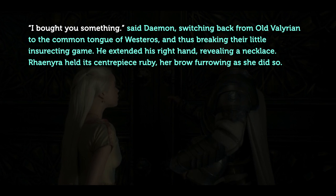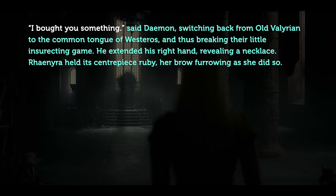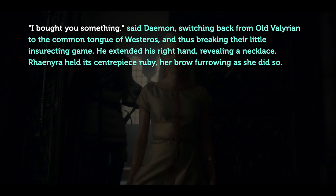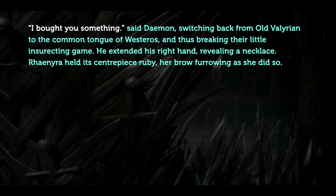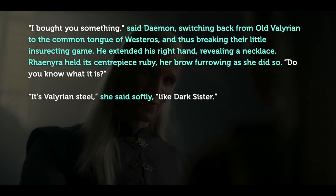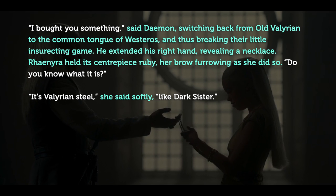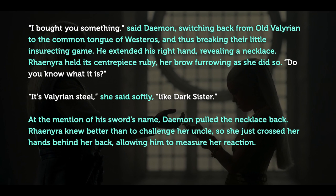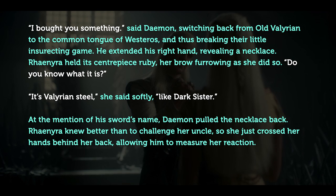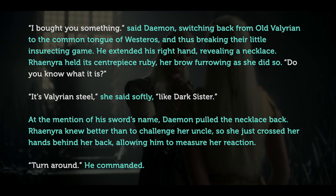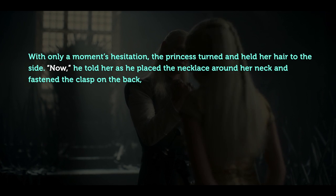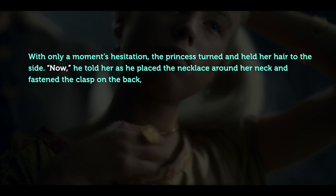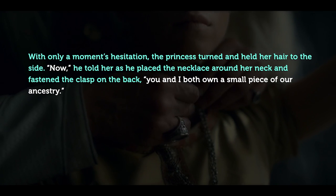'I bought you something,' said Daemon, switching back from Old Valyrian to the common tongue of Westeros, and thus breaking their little insurrecting game. He extended his right hand, revealing a necklace. Rhaenyra held its centerpiece ruby, her brow furrowing as she did so. 'Do you know what it is?' 'It's Valyrian steel,' she said softly, 'like Dark Sister.' At the mention of his sword's name, Daemon pulled the necklace back. Rhaenyra knew better than to challenge her uncle, so she just crossed her hands behind her back, allowing him to measure her reaction. 'Turn around,' he commanded. With only a moment's hesitation, the princess turned and held her hair to the side. He told her as he placed the necklace around her neck and fastened the clasp. 'You and I both own a small piece of our ancestry.'